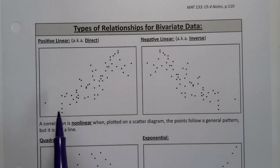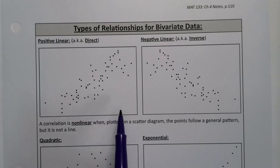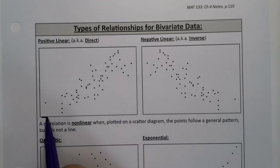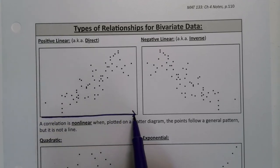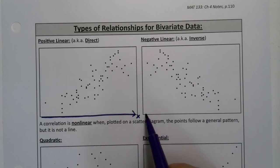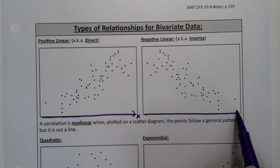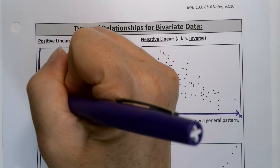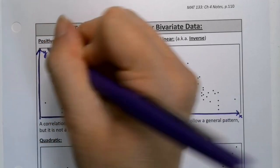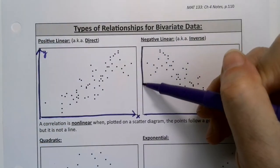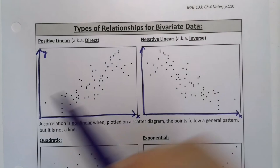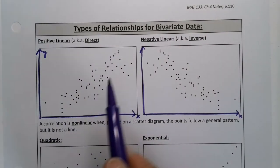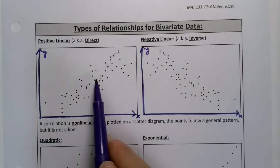You could also have a positive linear relationship, which means as x increases, as we move to the right on the graph, so remember, this down here is the x-axis, and then this vertical bit is the y-axis. So as x increases, the y increases. As we move to the right, the y goes up.